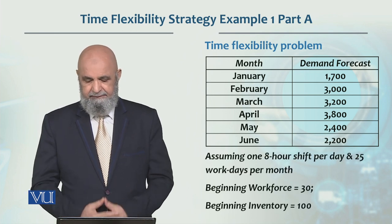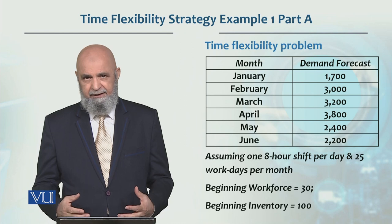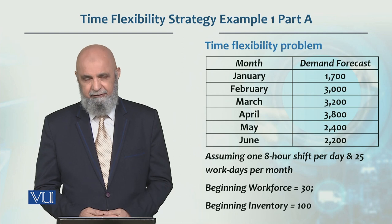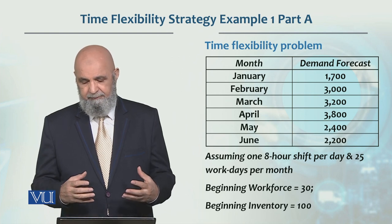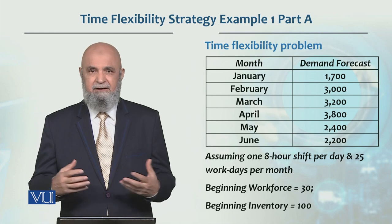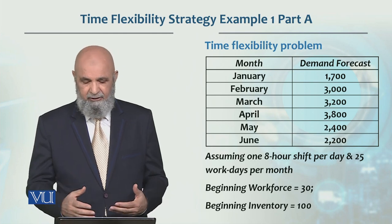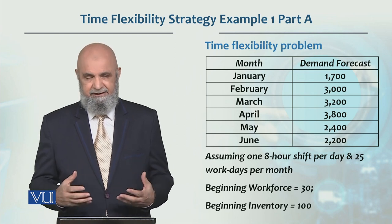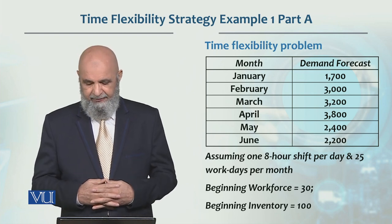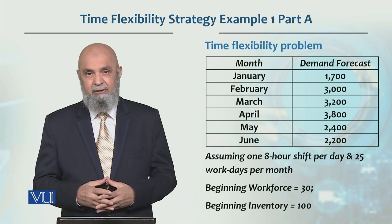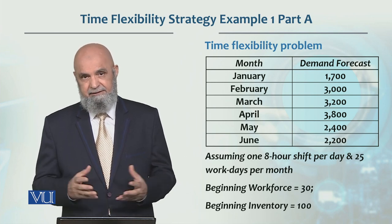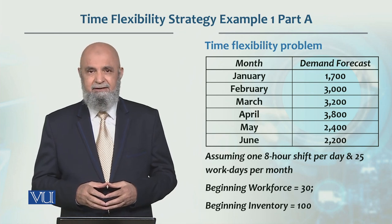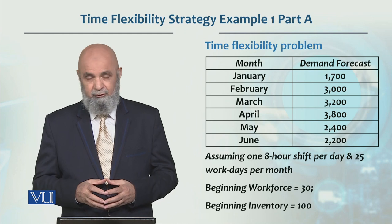Our assumption is that there is an eight-hour shift per day and there are 25 days per month — meaning all six months we assume 25 days per month. Beginning workforce includes 30 workers, and beginning inventory is 100 units.